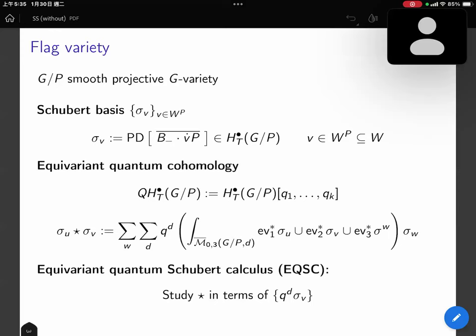There's a quantum product defined this way. Roughly speaking, it counts the number of genus zero stable maps to G mod P passing through the two inputs and then the point guide deal of outputs.